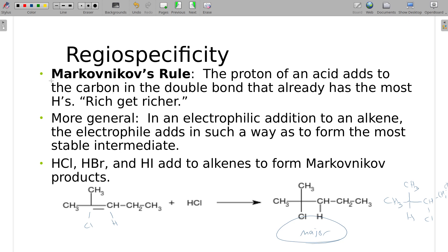There was a Russian chemist — Markovnikov — who came up with this rule. He referred to hydrogens when he said 'the rich get richer': the side with more hydrogens gets more hydrogens. This applies to HCl, HBr, and HI. There is a reason HF is left off this list, and we're not really going to talk about that in this chapter. We are only going to do this with those three.